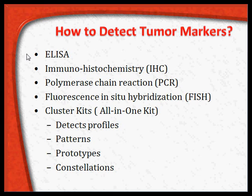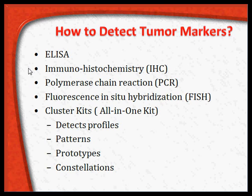The second test is immunohistochemistry, also called IHC, wherein tumor markers present in the tissues are identified by immunohistochemical methods. Polymerase chain reaction or PCR is also used to detect genetic material — DNA or RNA.